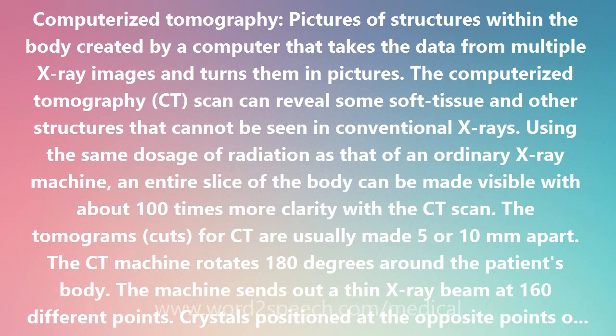The tomograms, or cuts, for CT are usually made 5 or 10 millimeters apart. The CT machine rotates 180 degrees around the patient's body, sending out a thin X-ray beam at 160 different points. Crystals positioned at the opposite points of the beam pick up and record the absorption rates of the varying thicknesses of tissue and bone. The data are then relayed to a computer that turns the information into a two-dimensional cross-sectional image.